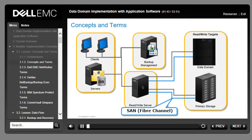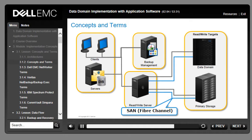This slide provides a brief review of basic terminology associated with the backup environment. In all configurations, there are clients that need to be backed up, a server that manages these backups, a server that writes to and reads from backup targets, and the backup targets themselves. In some environments, the backup management and read-write functions are performed on a single server. Networking connectivity can be via Ethernet LAN or fiber channel SAN.